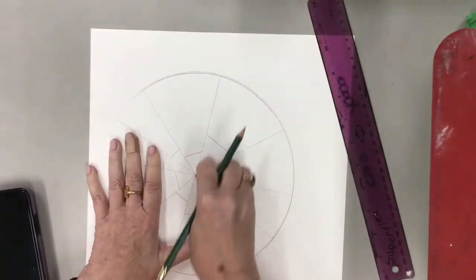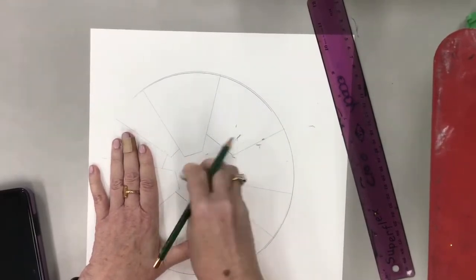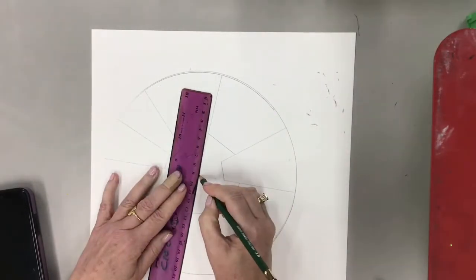Now I can erase the lines that go from the top of our building to the center point, to the vanishing point. But I want to leave that vanishing point because it's still really important. We need to leave it there.